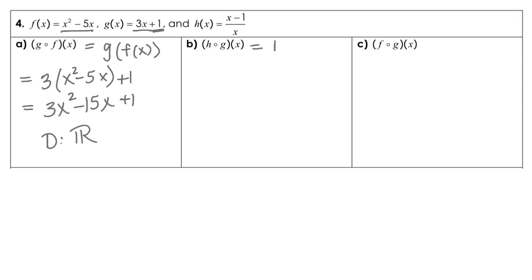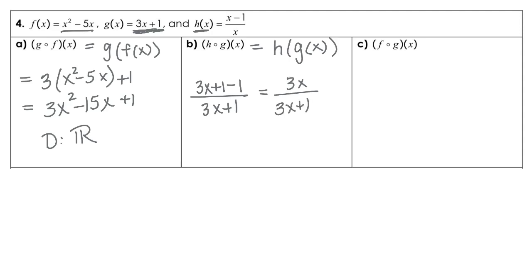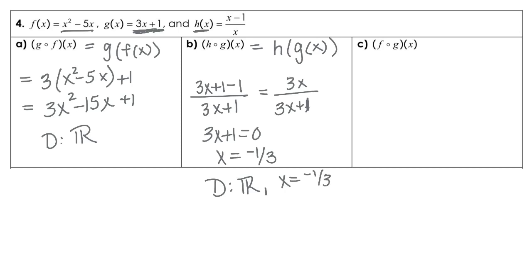For part b, we need to find h of g of x. Here's function h and here's function g, so that's going to look like x minus 1, but I'm going to sub in 3x plus 1, and then minus 1 over 3x plus 1. In the numerator we have 3x, and the denominator 3x plus 1. That's all you can do — please don't try to cancel the 3x. For our domain, since we have a rational function, we set the denominator equal to 0 and solve. The domain is all reals except x cannot be negative 1 third.